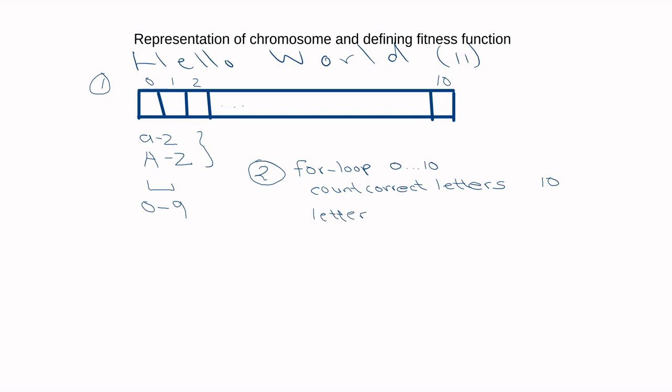You could also give 5 points if the letter is correct but the wrong case — for example a lowercase h instead of capital H. If you then design your mutation function to capitalize on this, the fitness function works very well. Your crossover could be a one-point crossover, while your mutation might change the case of a character, so a lowercase e becomes a capital E, or change a digit like six to eight.